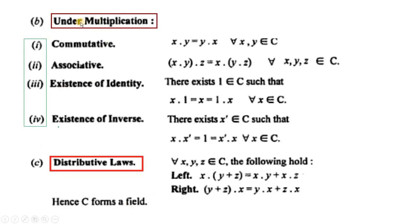Now we check under multiplication. We remove additive identity zero (i.e., 0 + i·0) from C, because 0 + i·0 has no multiplicative inverse. Field کی property یہ ہے کہ (F, +) abelian group ہو اور F without additive identity under multiplication abelian group ہو۔ So we check C without additive identity: commutative law holds for any two complex numbers, and associative law holds for three elements.